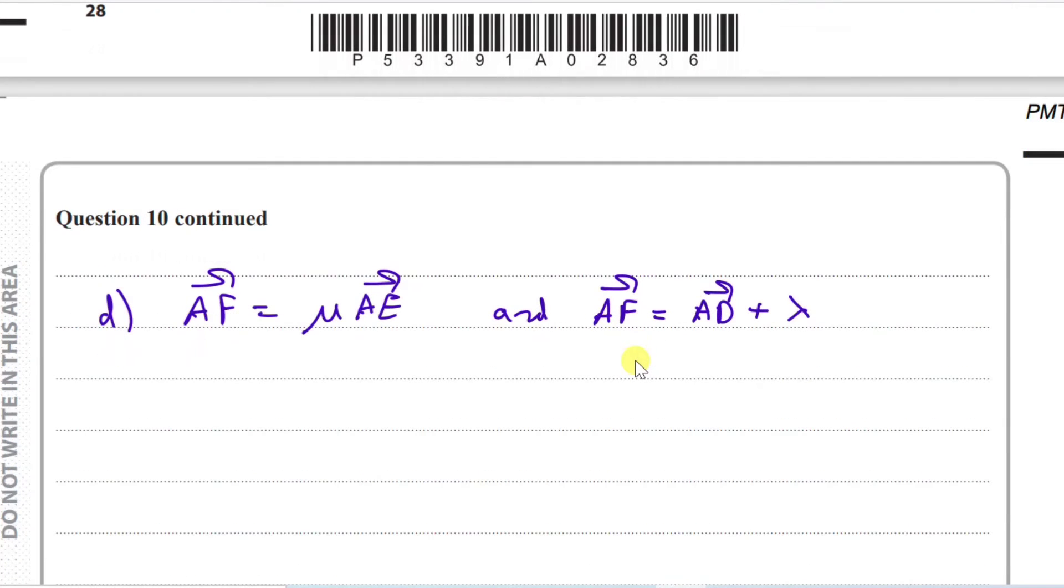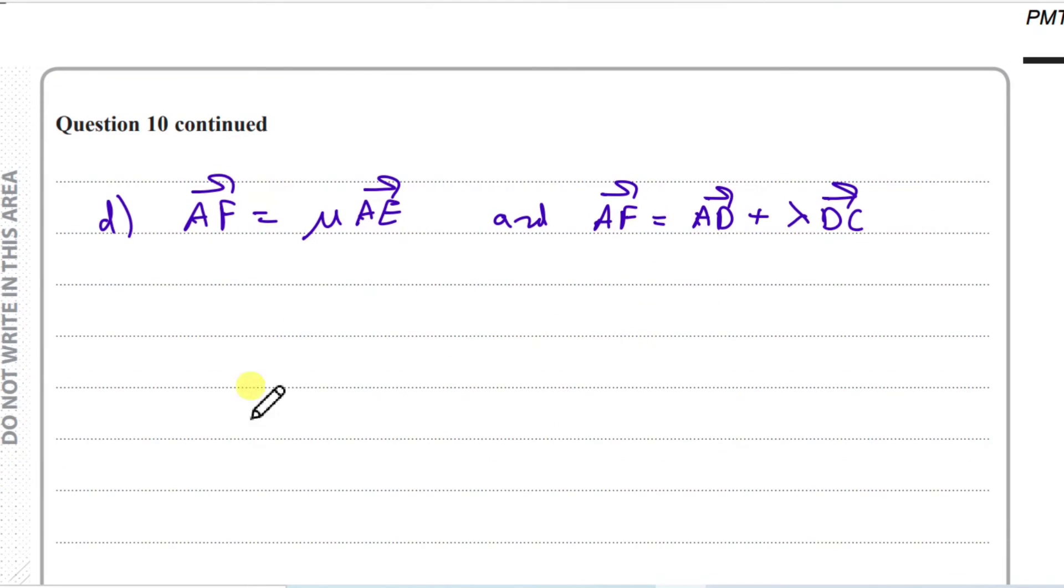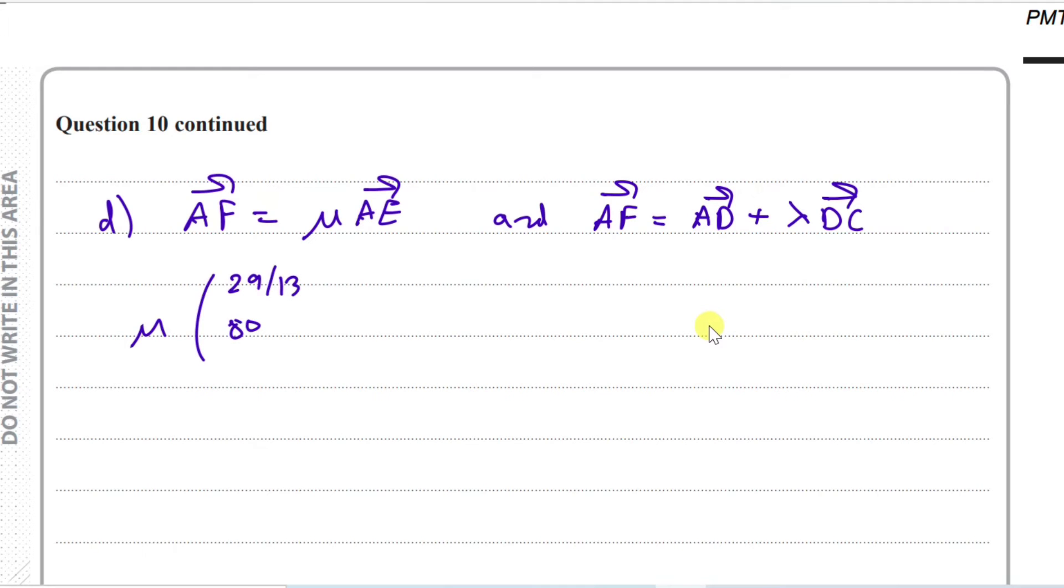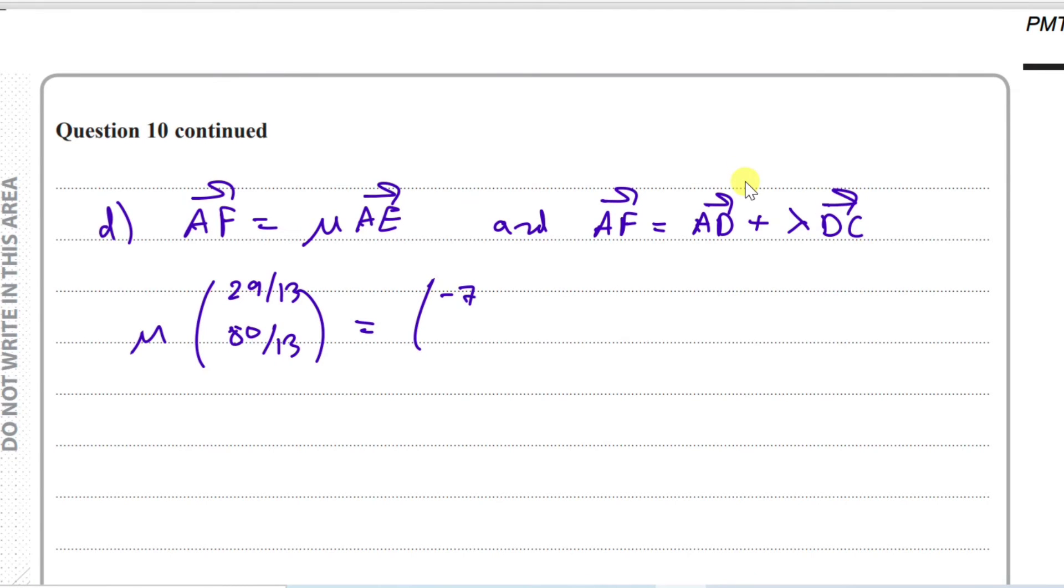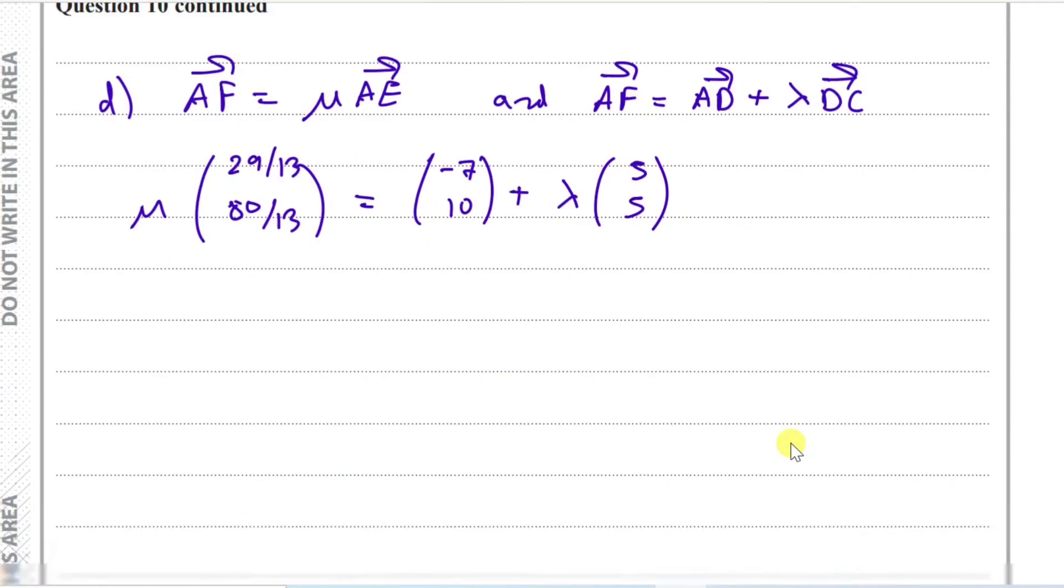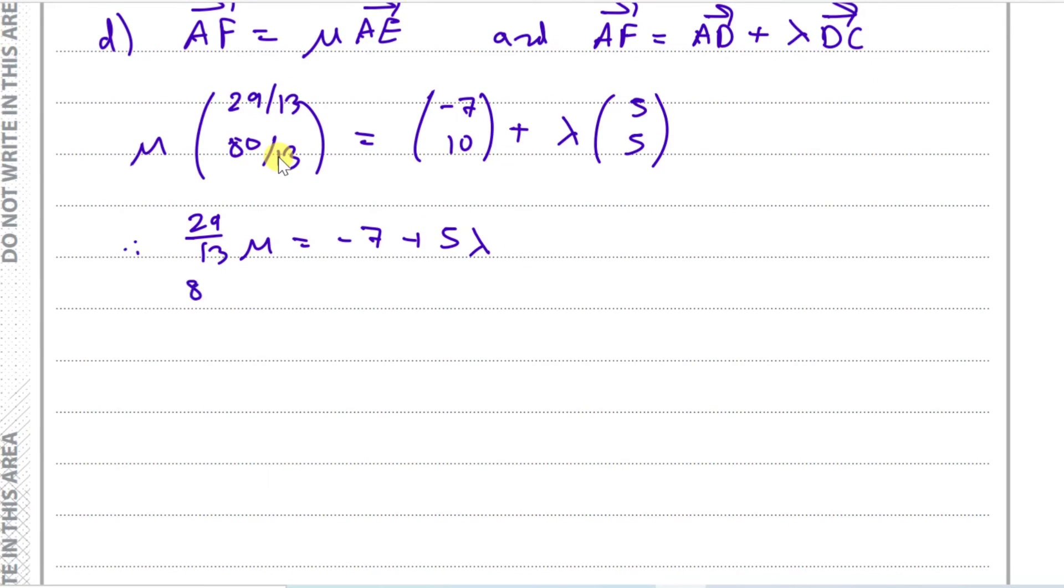So part D. So let's begin. We're going to now equate these two sides. So we're going to have on the left hand side mu AE. I'll keep in column form because it's easier to work out with. And it's going to equal the right hand side minus 7 and 10 plus lambda. Now we just expand and multiply and equate. So we're going to have basically two simultaneous equations. The first equation, if we look at the i term in the top row, it will be mu times 29 thirteenths equal to minus 7 plus 5 lambda. And the second equation is going to be 80 thirteenths of mu equals 10 plus 5 lambda.